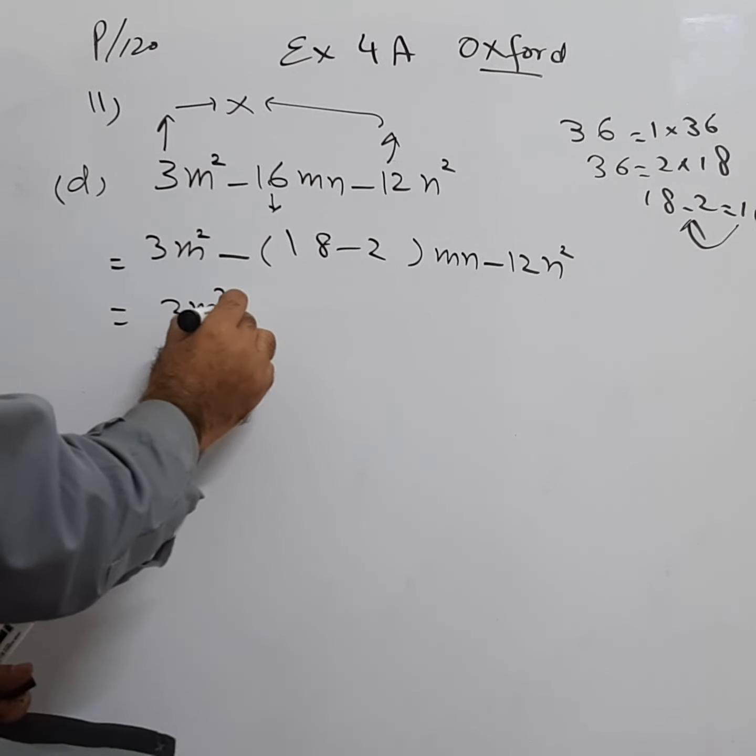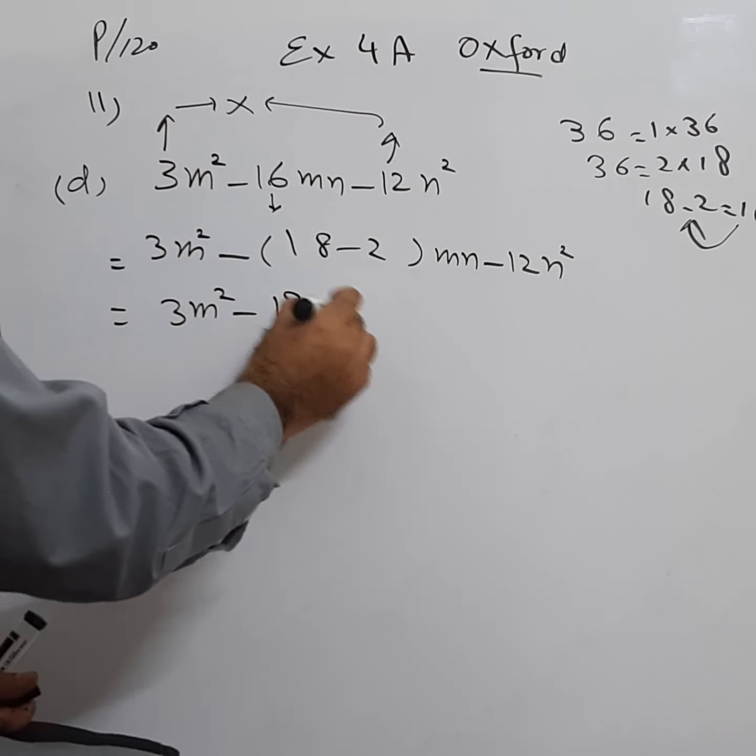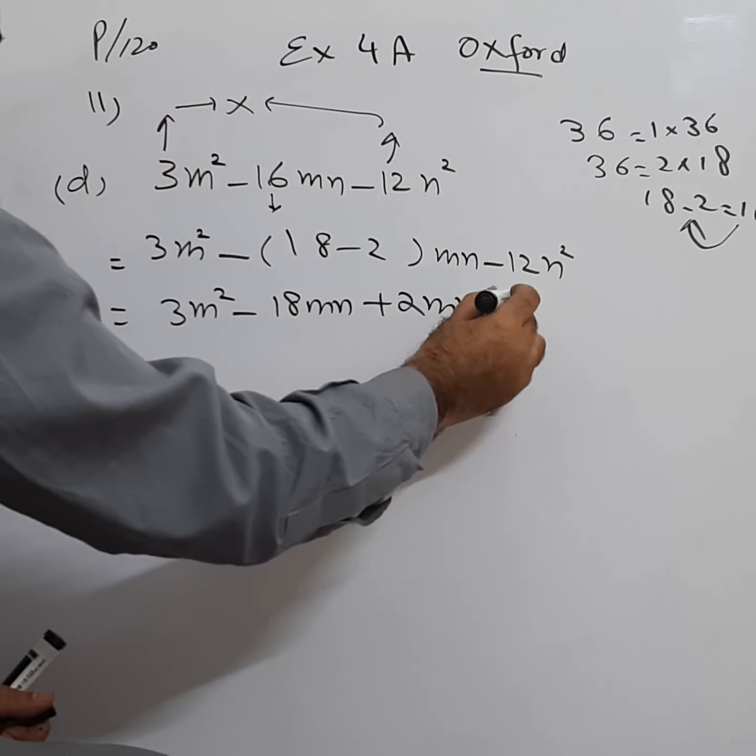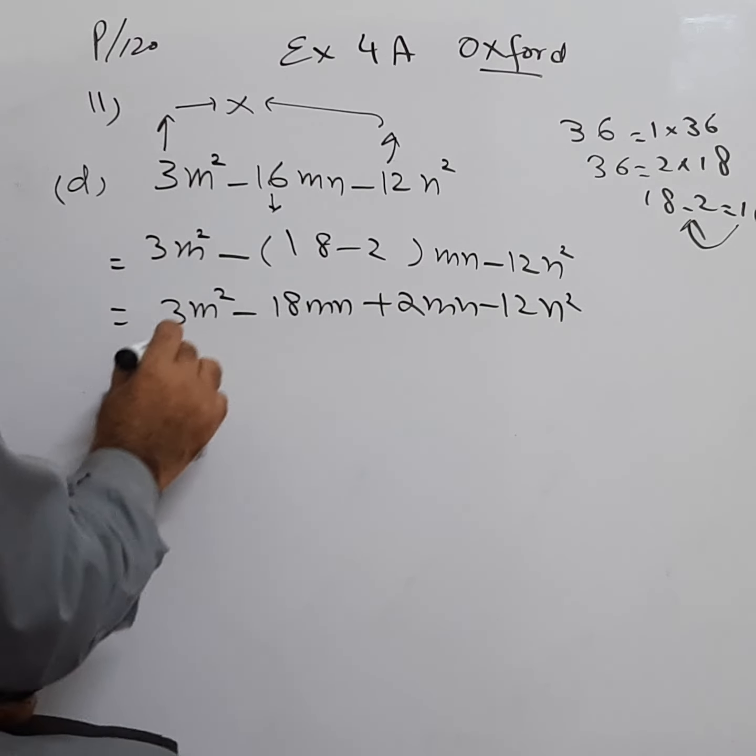3m squared minus 18m, and minus minus plus 2m, and minus 12n squared.